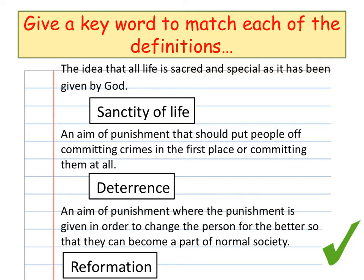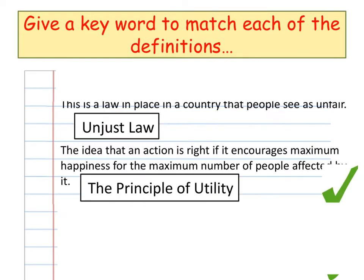An aim of punishment that should put people off committing crimes in the first place or committing them at all is deterrence. An aim of punishment where the punishment is given in order to change a person for the better so that they can become a part of normal society again is reformation. A law in place in a country that people see as unfair is an unjust law. The idea that an action is right if it encourages the maximum happiness for the maximum number of people affected by it is the principle of utility.